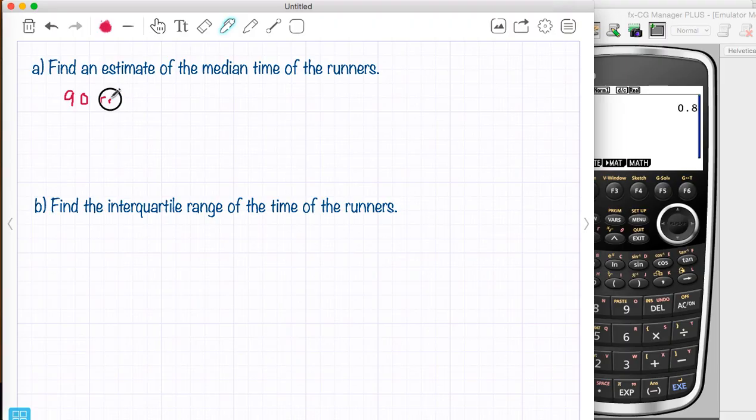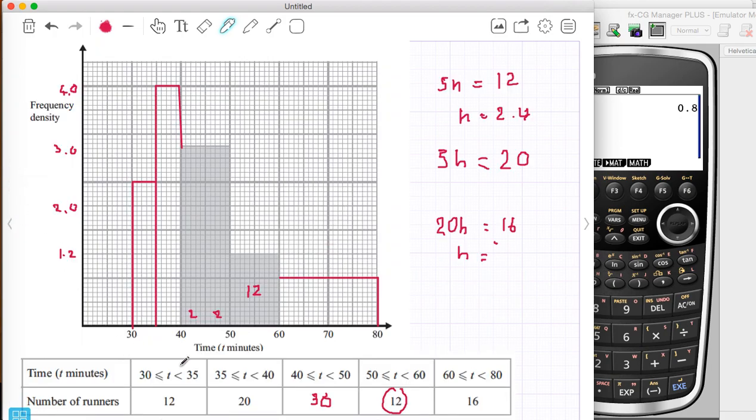Now the median is the person who's in number 45. If it was that easy it would be fine but it's not I'm afraid. So we're looking for the 45th person. So I'm going to go along and I'm going to count along the bars. So I know this bar is 12.